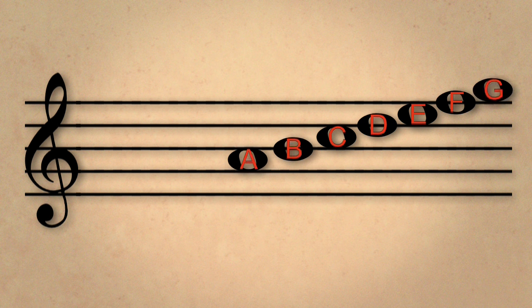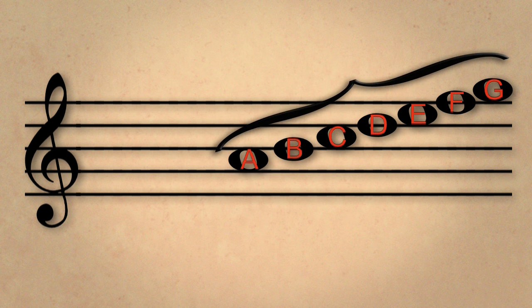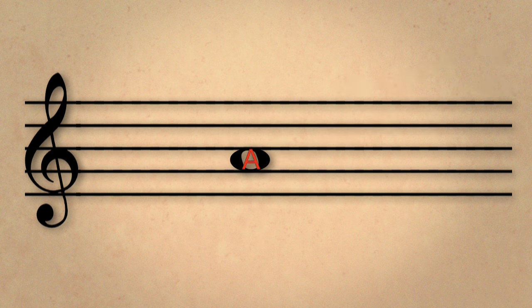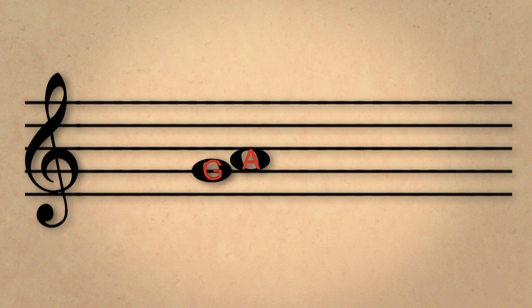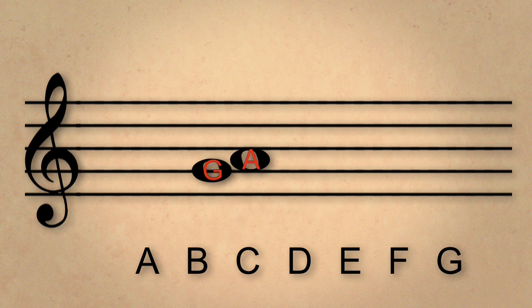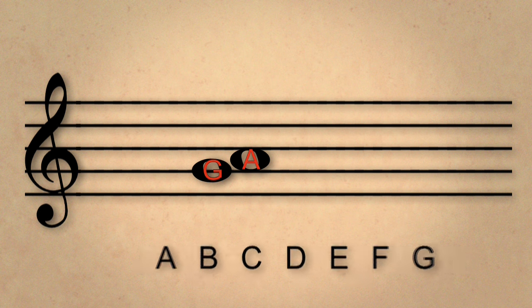Now we can see the succession of notes from A to G on the treble clef staff. If we place a note below or lower than the second space, A, on the second line, it is a G. Remember, the alphabet goes from A to G.